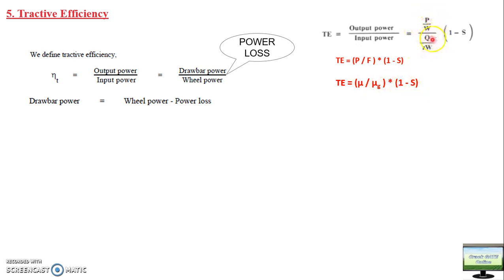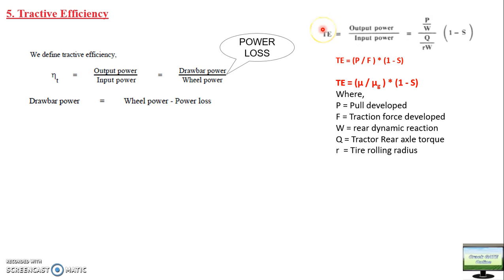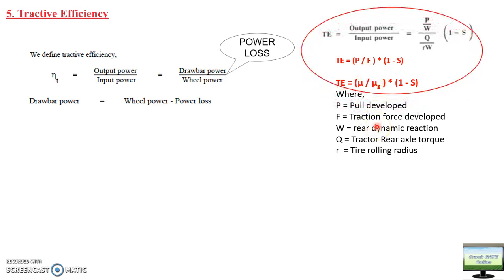So tractive efficiency = μ / μg × (1 − s) = (P / W) / (Q / RW) × (1 / s). If your concepts are clear: output power is drawbar power, which is draft times actual velocity; input power comes from the engine side as torque. Torque divided by rolling radius R gives force. So pull force divided by traction force times (1 − s). Dividing both terms by W gives μ / μg × (1 − s). Slip contributes here, pull contributes here, and traction also contributes.